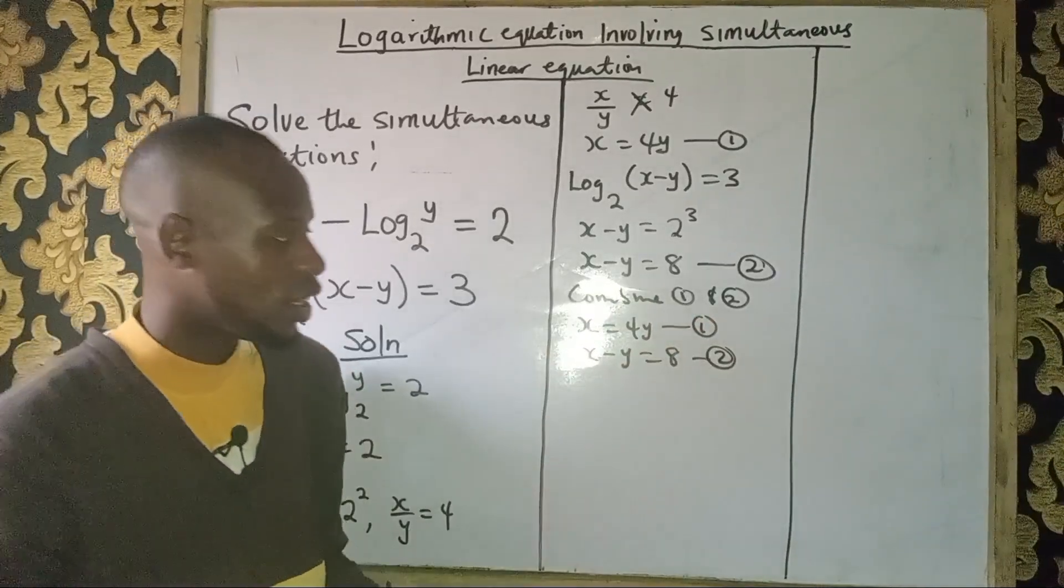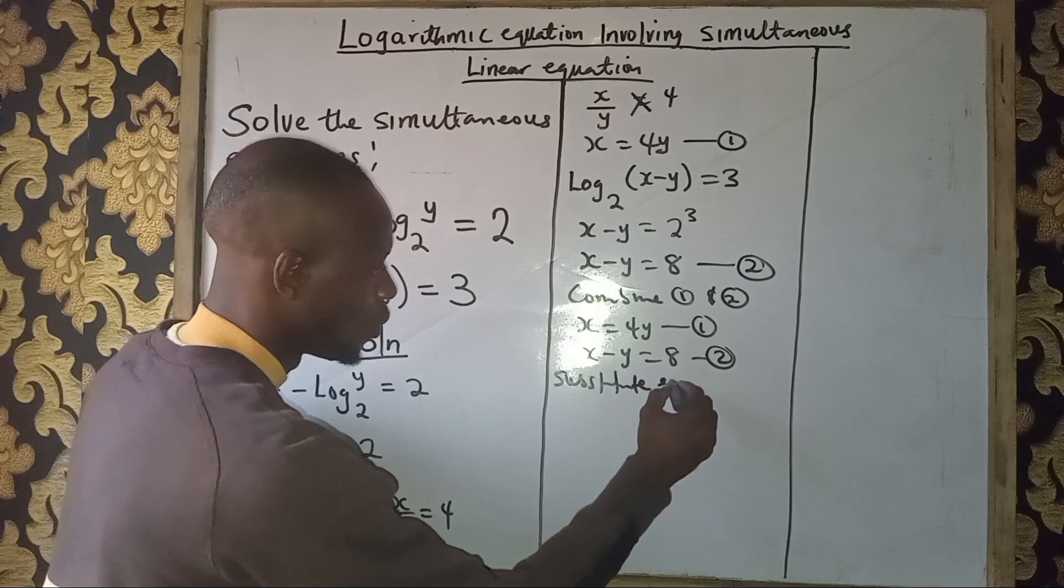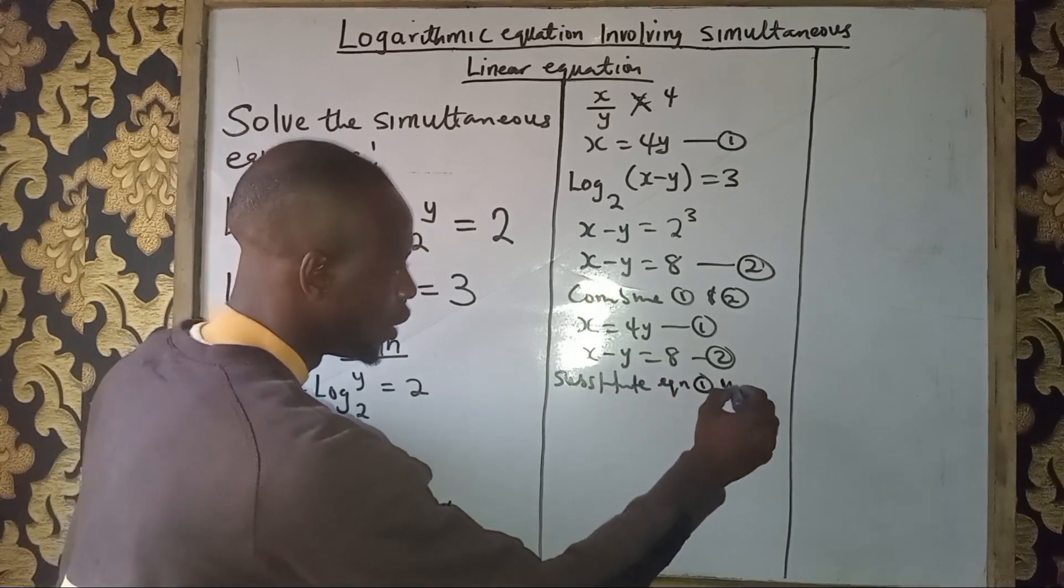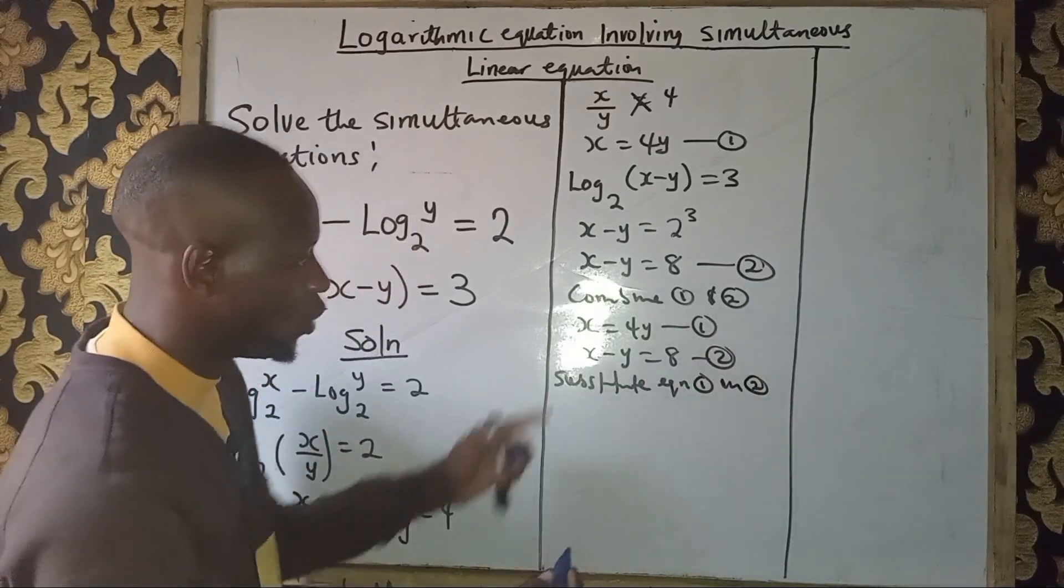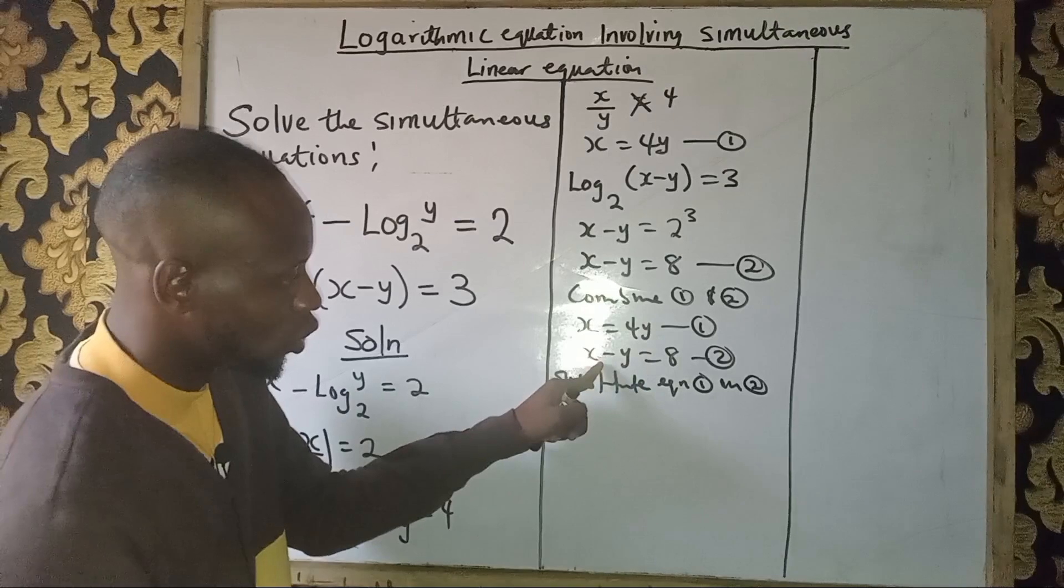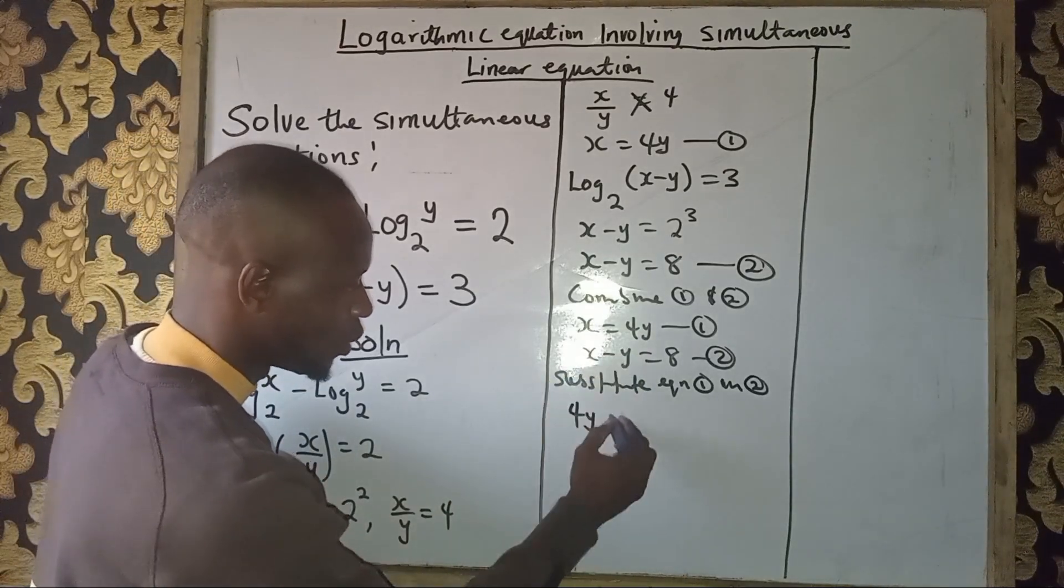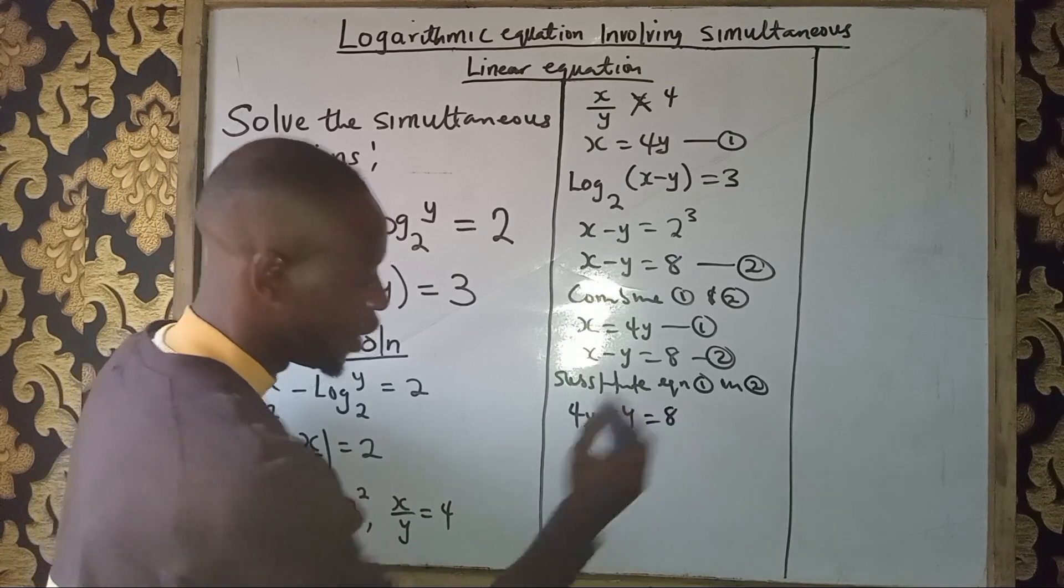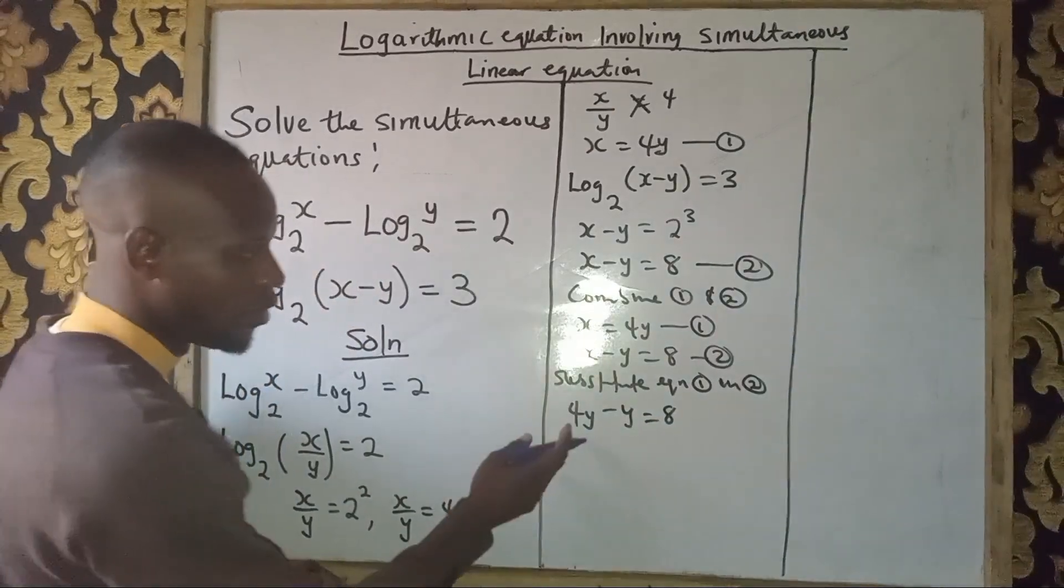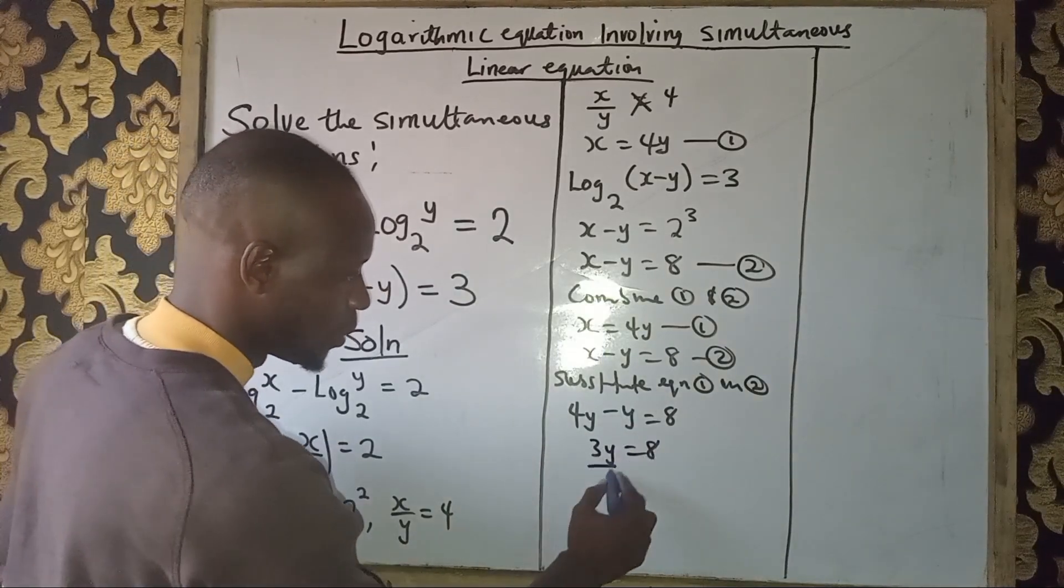Substitute equation 1 in 2. Anywhere we see x in equation 2, we put 4y. So equation 2 becomes 4y minus y equals 8. 4y minus y gives us 3y equals 8, so divide both sides by 3.